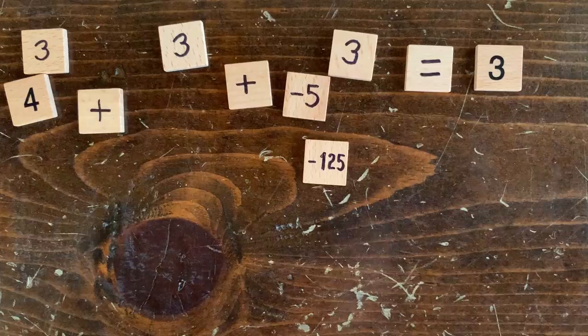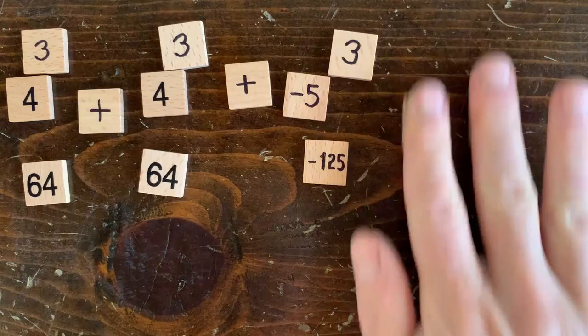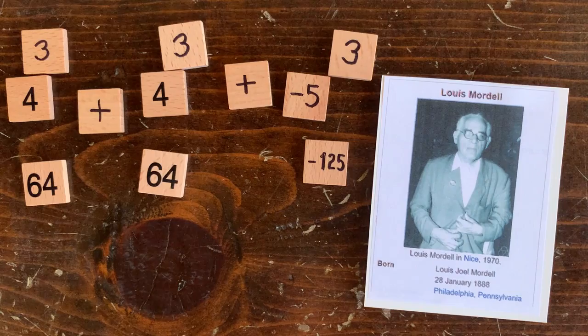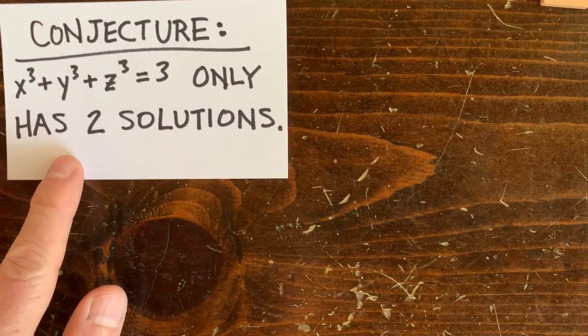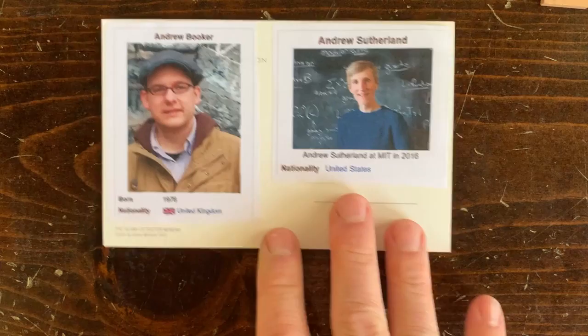Because negative 5 times negative 5 times negative 5 is negative 125. And 64 plus 64 is 128 minus 125 is 3. Now, Louis Mordell noted that no matter what other values of X, Y, and Z people tried over hundreds of years, they could never get 3 to come out. So we have a conjecture, an unproven mathematical assertion that might be true or might be false.